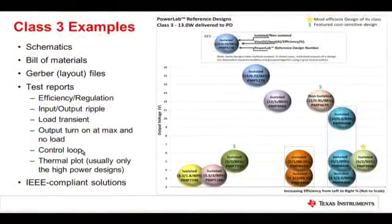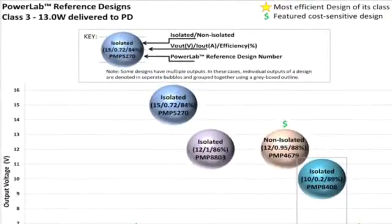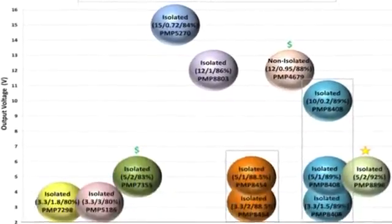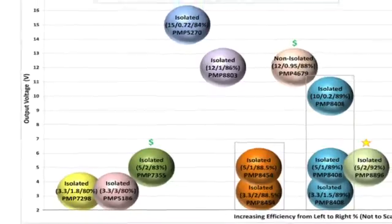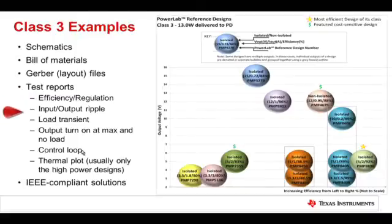Now this is just one example of the reference designs we have available through that widget. This slide demonstrates other solutions that you can find across a wide range of output voltages and a wide range of cost and efficiency trade-off performance. Each one of these designs, when found, has the tool folder that we demonstrated, which has schematics, bill of materials, Gerber files, test reports, and they're all IEEE compliant solutions. For more information and detailed technical discussion, please go to any of the following websites listed on the screen. Thanks for watching.